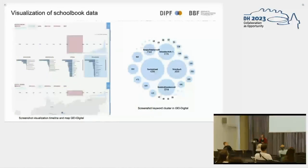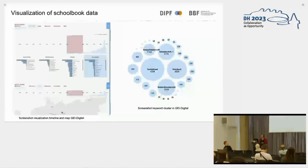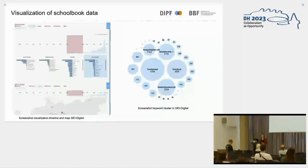This is an example from history of education research — a visualization of school book data from the Leibniz Institute, the Georg Eckert Institute. It offers diverse approaches on the data: a timeline, topics, and a map in the lower left part, and on the right a screenshot of the keyword cluster of the GEI digital school books. This is more of a quantitative approach on the data — you have numbers, amounts of books in a certain time period — and for research purposes one should perhaps offer more than just a quantitative approach.